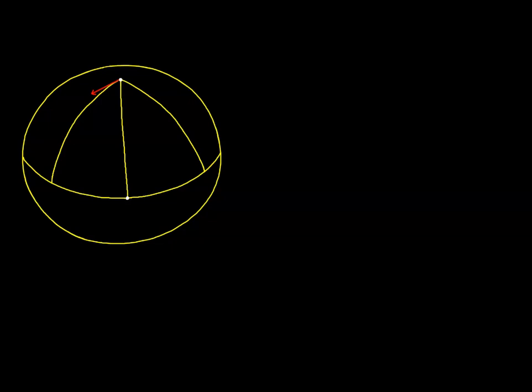Let's see what happens when we parallel transport this vector from one point to another on a spherical surface. We're going to parallel transport along this line of longitude to the equator and then over to this second point. This line of longitude is a geodesic, and since the vector is tangent up here, it will remain tangent all the way as it's transported down this line of longitude. Eventually, it winds up pointing straight down.